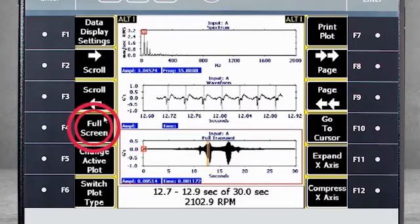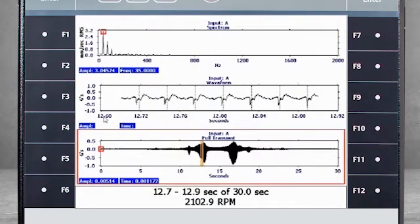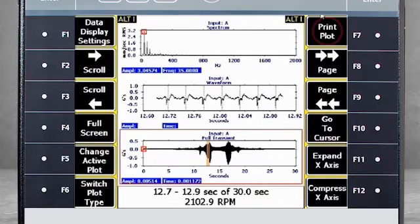F4 full screen removes the keys for a bigger picture. F7 print plot sends a JPEG or bitmap image to your printer. More options are discussed in the tutorial on print functions.